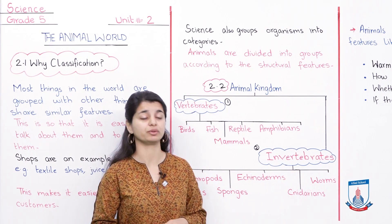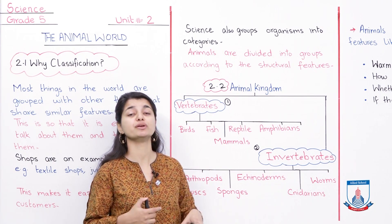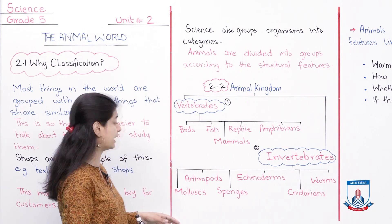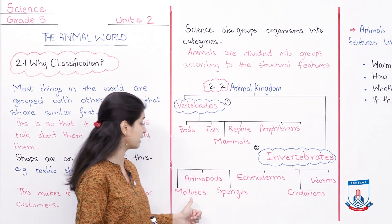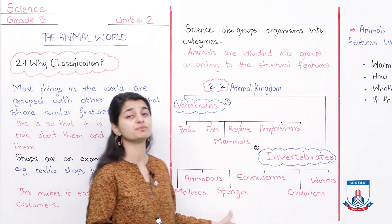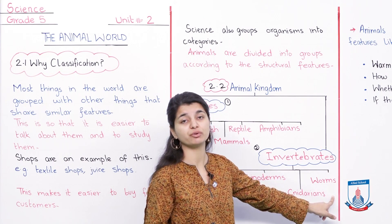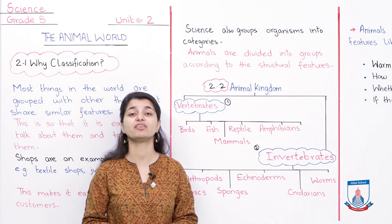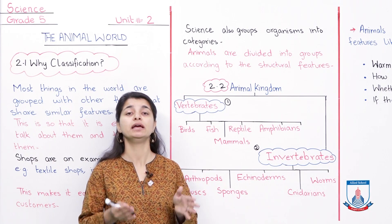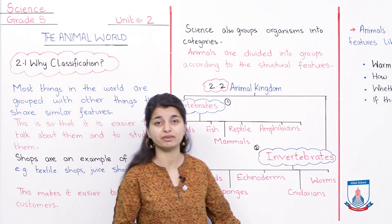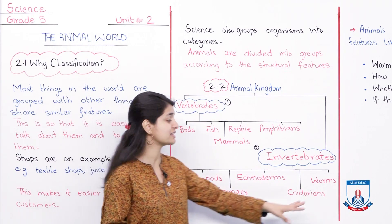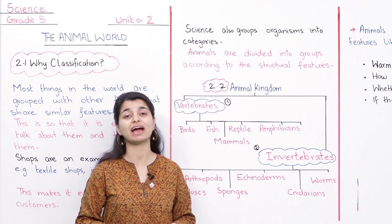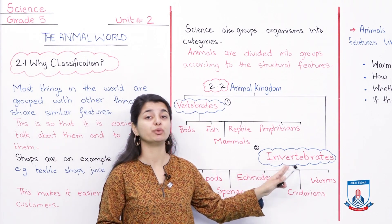Invertebrates are animals which do not have a backbone - no structure, no spinal column. There are 6 categories of invertebrates: arthropods, mollusks (like snails), sponges, echinoderms, worms (like earthworms), and cnidarians. This detail will be explained in a special lecture so as not to confuse you right now. What is common to all of them is that they are all invertebrates - they all do not have a backbone. Vertebrates have a backbone; invertebrates don't.